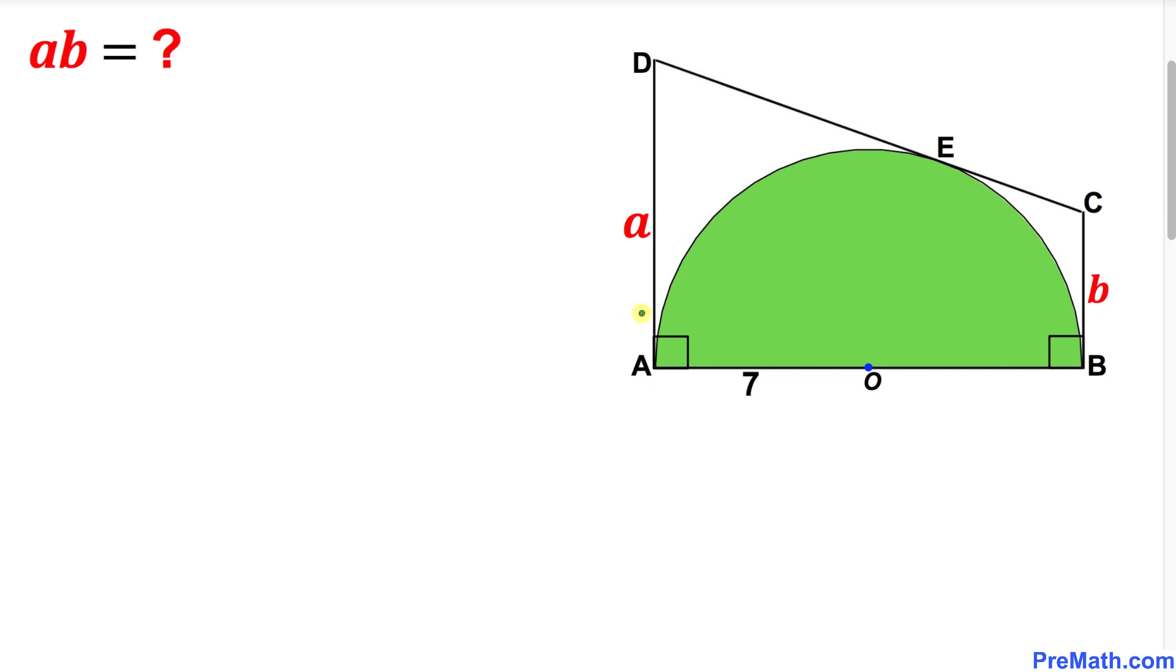Welcome to PreMath. In this video tutorial, we have a trapezoid ABCD with parallel side lengths a and b, and a semicircle inside with radius 7 and center O. We're going to find the value of a times b.